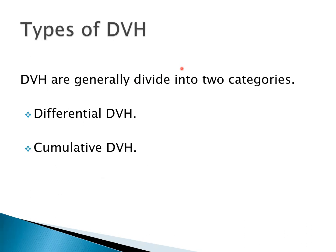There are two types of DVH: differential DVH and cumulative DVH. Almost all treatment planning systems in radiotherapy have both kinds of DVH.